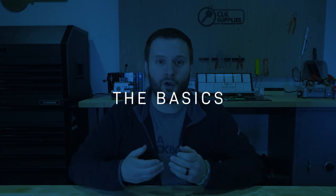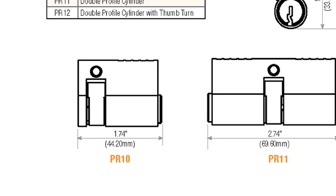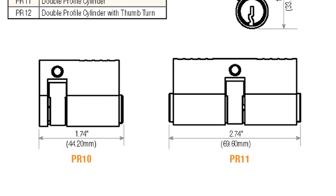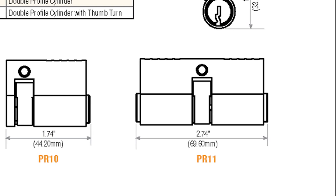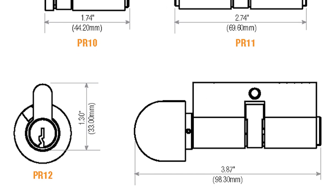The cylinders I'm going over today are the GMS aftermarket replacement profile cylinders. These come in three different options depending on your situation. The first is the single-sided profile cylinder, the second is the double-sided profile cylinder, and the third is a single-sided cylinder with a thumb turn on the other end.